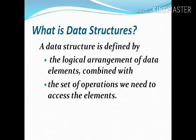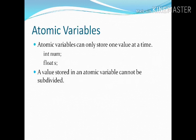Repeating again: data structure is the structural way we have to store data. For that purpose we need atomic variables. An atomic variable can only store one value at a time. The word atomic comes from atom, meaning one — and a variable stores values, so an atomic variable stores just one value at a time.